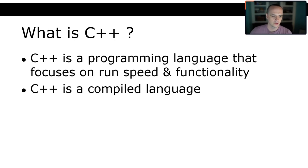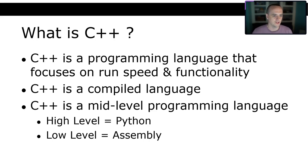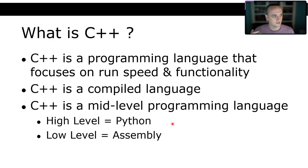C++ is a compiled language and a mid-level programming language. A low-level language would be something like Assembly, where you're almost writing in machine code. A high-level language would be something like Python, where you're almost writing English in some cases. C++ is somewhere between Python and Assembly. Unlike Python, which is interpreted — run on the fly line by line — C++ is compiled to machine code for a specific architecture and can only run on that architecture.